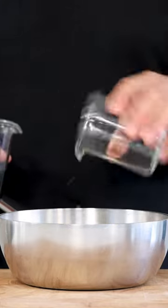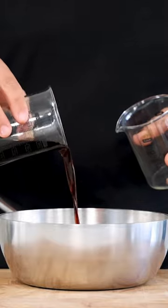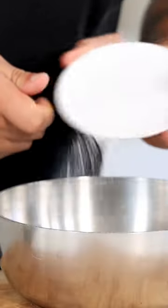Meanwhile, mix 100 grams of orange juice with 100 grams of the ponzu that we just made and also add 1.5 grams of agar powder. Then mix it and bring it to a boil.